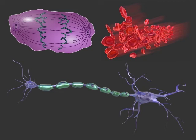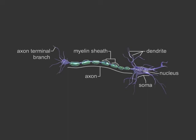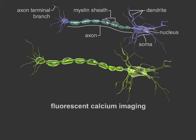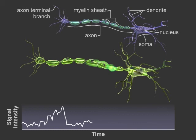Modern recombinant DNA technologies and microscopy can be combined to modulate and visualize molecular interactions. As an example, fluorescent calcium imaging can be used not only to observe neuronal activity, but also to associate behavioral characterizations with physiological states.